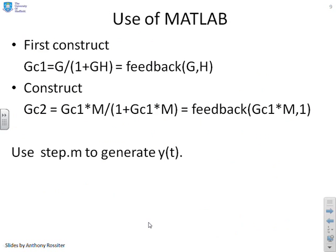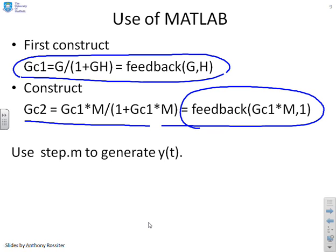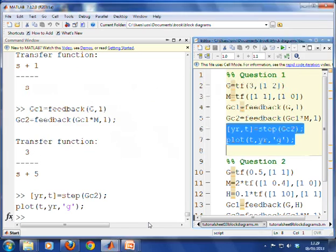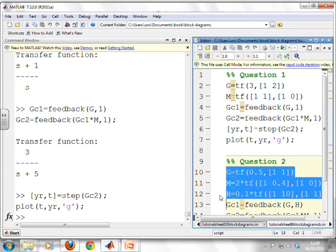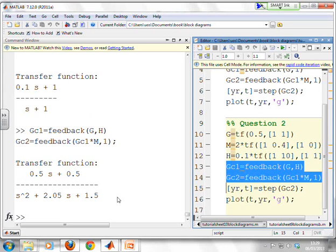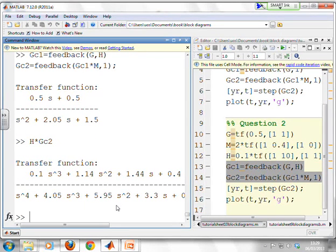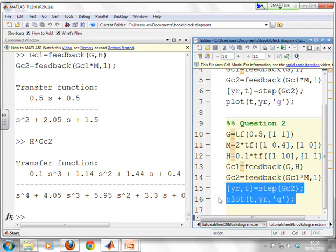Now, again, if you want to use MATLAB, you can see I can get the inner block. Here it is using feedback G comma H. And then I can get the outer block, which was for Y using this statement down here. So what have I got? Feedback GC1 times M comma 1. And if I wanted to get the GCZ, then I can now just do H times GC2. So again, we'll just show that. We've got the code down here. There's your G, your M and your H. So we can enter them. I can do GC1 and GC2. Now, I haven't here done the command with the H, but we'll just show. You can do H times GC2. And it will do it for you. Very straightforward indeed. And if I want the step response, again, you can use the normal commands.